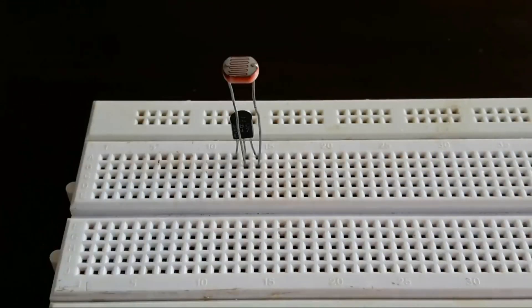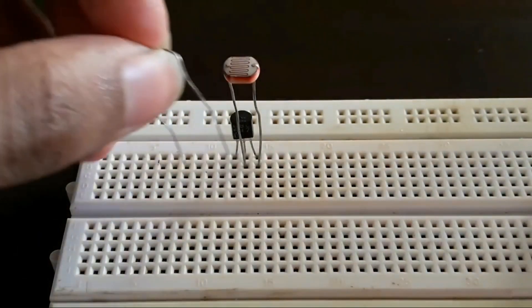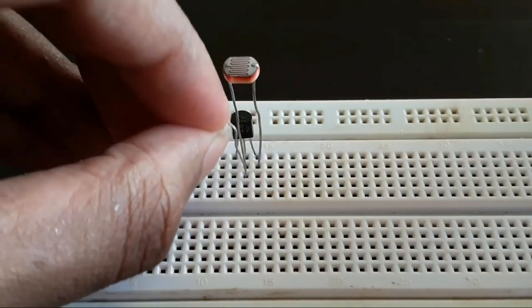Now connect the 100K resistor from the base of the BC-507 transistor to a blank space on the breadboard.